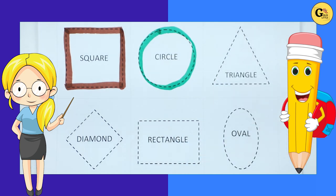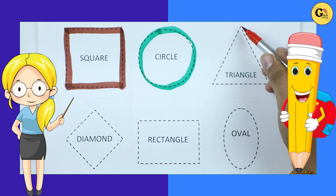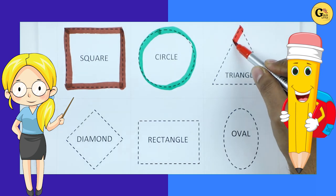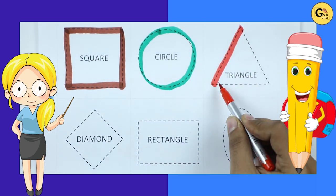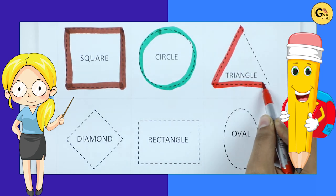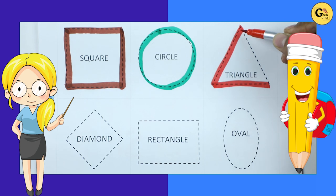Triangle. We make triangle shape with red color. It's triangle.